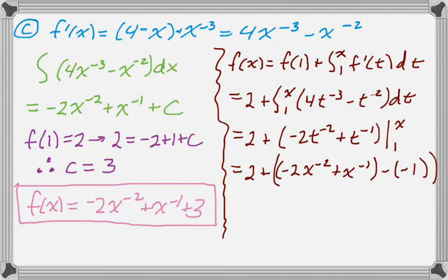So all that minus negative 1 is the same as plus 1. So I get 3 minus 2x to the negative 2 plus x to the negative 1. Which is exactly what I got the other way. But I just thought I'd show you that both ways work equally well.